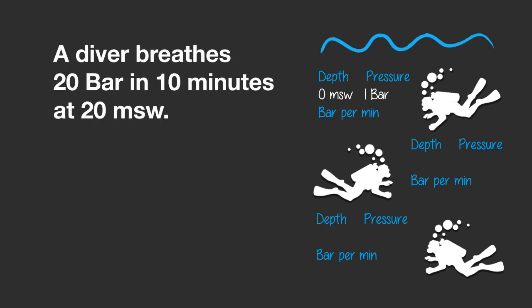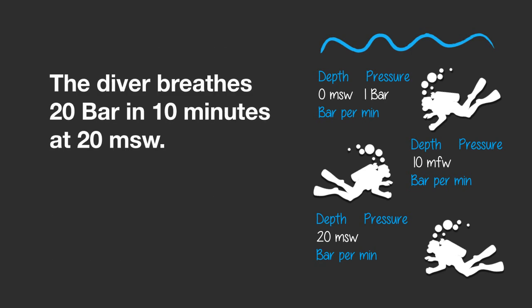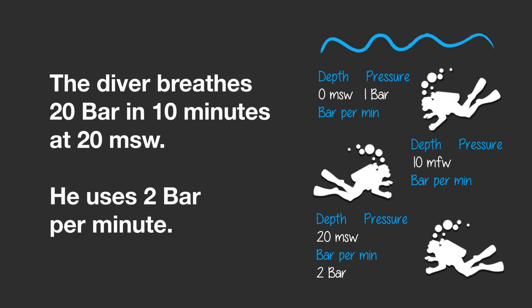One last thing. You may want to work out something like this: a diver breathes 20 bar in 10 minutes at 20 metres of seawater. How much air will he breathe in 20 minutes at 10 metres of fresh water? Now this may look complicated, but all you need to do is first work out how many bar the diver breathes per minute. If the diver breathes 20 bar in 10 minutes at 20 metres of seawater, he uses 2 bar per minute — 20 bar divided by 10 minutes.